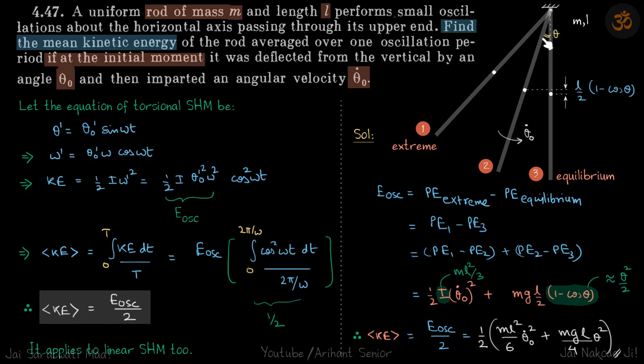We are given a rod that is turned by an angle θ and then is given an angular velocity θ₀ dot. We need to find the mean kinetic energy of the rod averaged over one oscillation period.